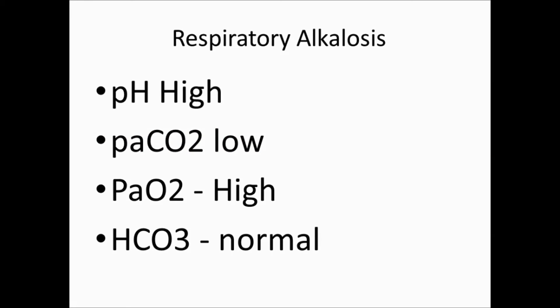For respiratory alkalosis: the first step is pH high — alkalosis. Then check PaCO2; if it is low, move to bicarbonate. If bicarbonate is normal, check PaO2. If oxygen is high and carbon dioxide is low, think respiratory alkalosis — the patient is hyperventilating. An example of respiratory alkalosis is aspirin toxicity.